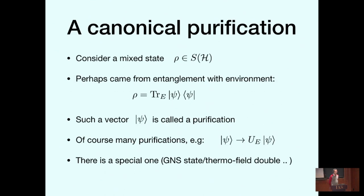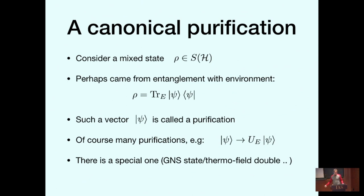To begin, I'm going to introduce something called a canonical purification. We consider a mixed state rho. When you have a mixed state, you can always purify it with some environment such that I have some pure state psi, and I trace over the environment to get back to rho. It turns out there are many purifications — you can rotate with some unitary on the environment and get another purification.